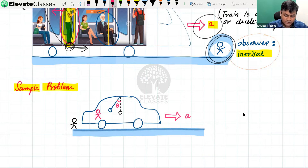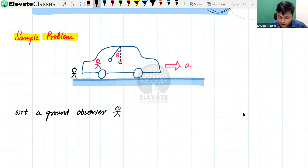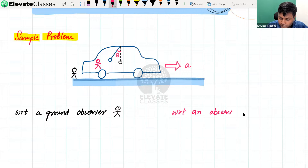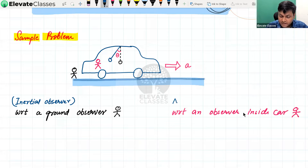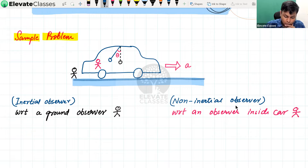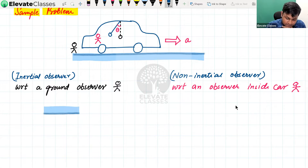We will explain this based on two observers. First, with respect to a ground observer, and then with respect to an observer inside the car. The ground observer is essentially an inertial observer — someone on a platform that is non-accelerating. The car observer is a non-inertial observer because they are inside a platform which is accelerating. Let us look at the diagram of forces according to both observers. First, we restrict our attention to the inertial observer. According to the inertial observer, there is a car ceiling, and the pendulum is experiencing some displacement.